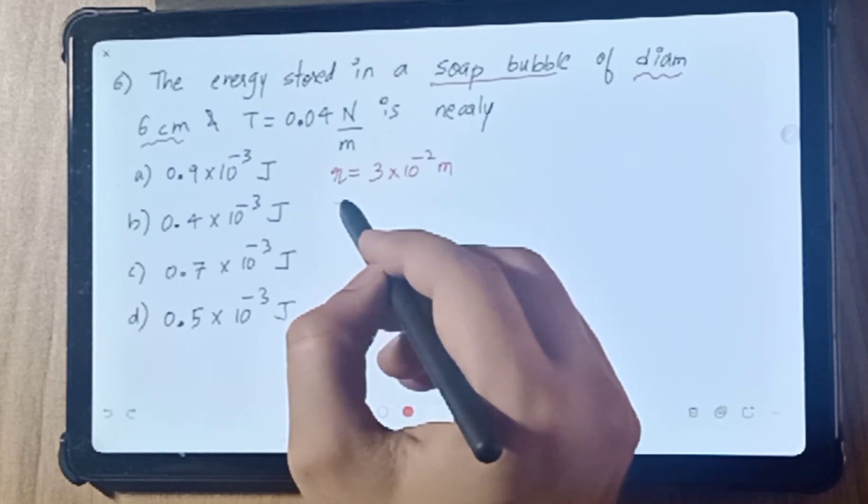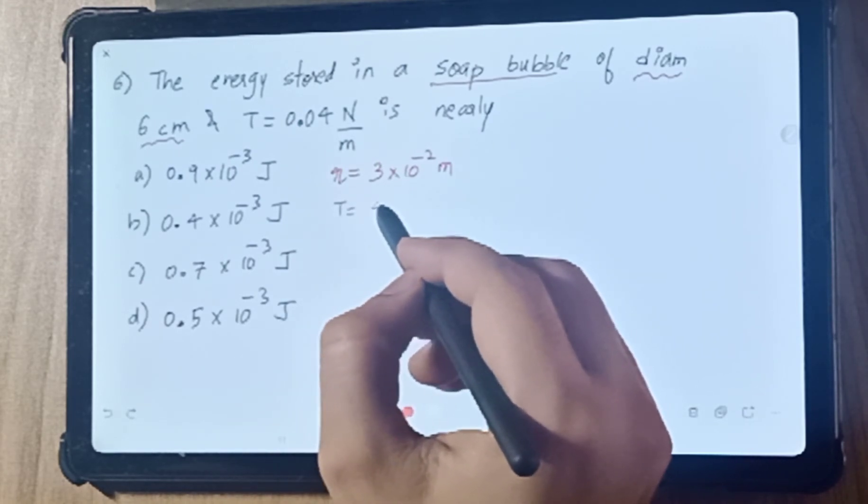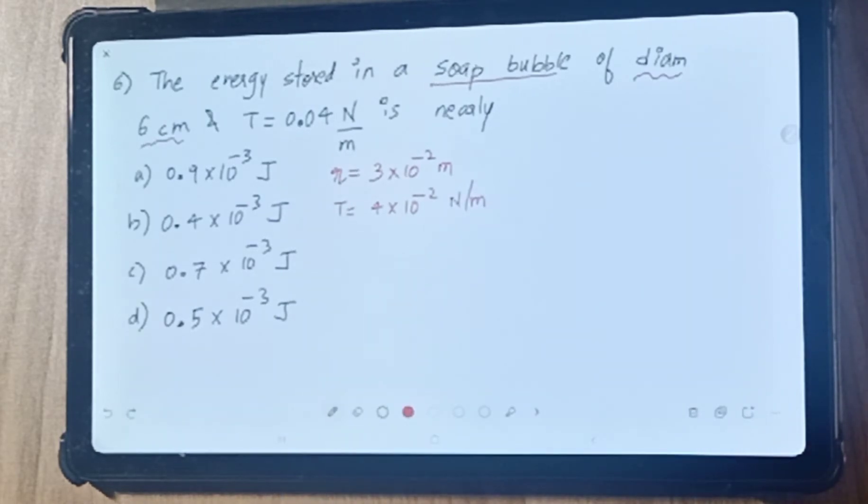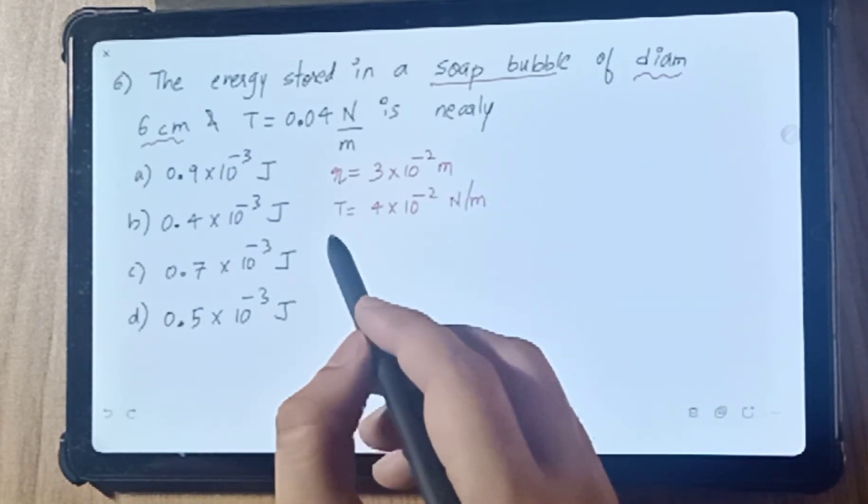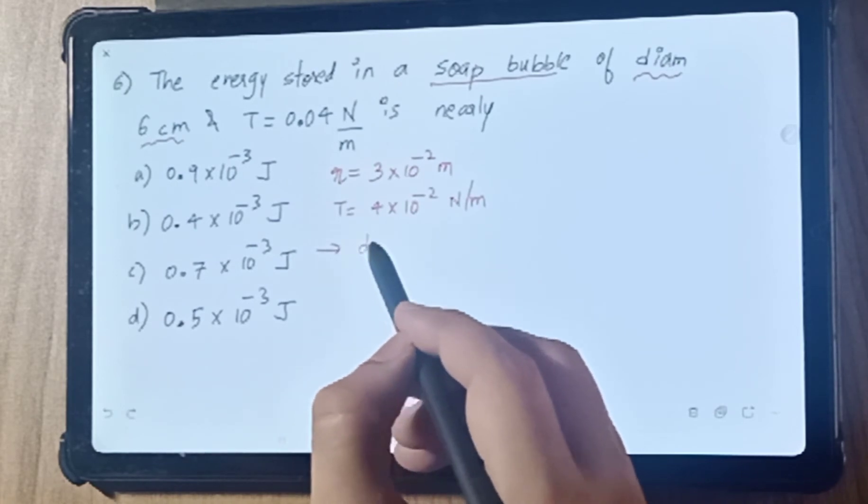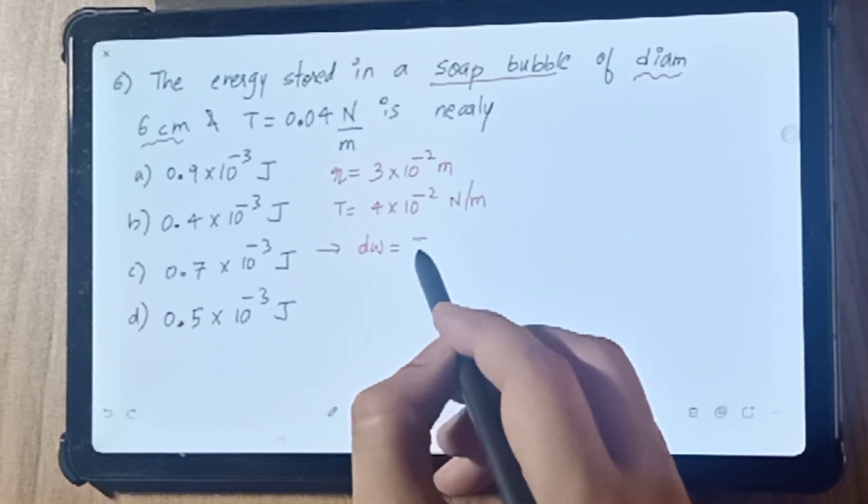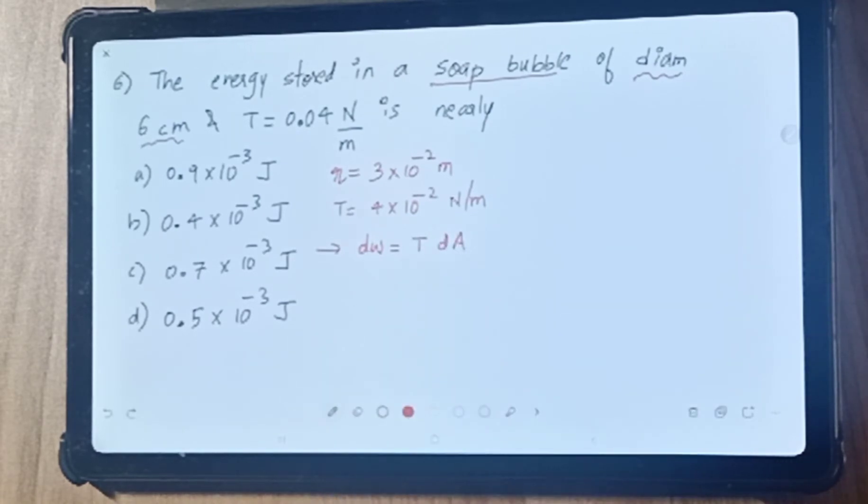Surface tension is 0.04, that is 4 × 10⁻² Newton per meter. You're being asked about energy stored, meaning surface energy. Tell me the basic formula: DW = T × DA, where T is surface tension and DA is surface area.